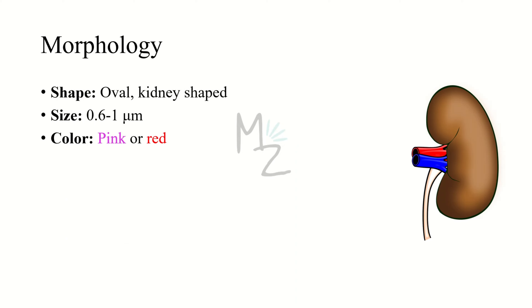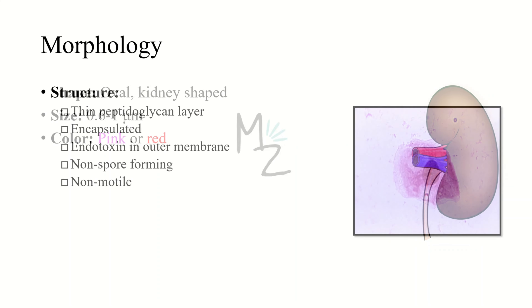Neisseria meningitidis is oval and kidney-shaped. It varies in size from 0.6 to 1 micrometer. It is pink or red in color, being a gram-negative bacterium.